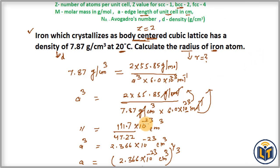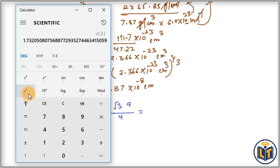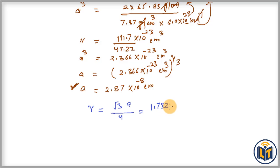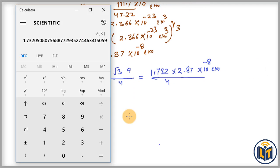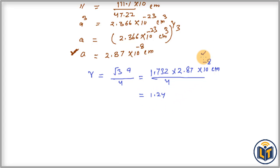Plugging in the values: R equals (root-3 times a) divided by 4. The value of root-3 is 1.732, and a is 2.87 times 10 to the power minus 8 centimeters. Multiplying 1.732 by 2.87 and dividing by 4 gives 1.24 times 10 to the power minus 8 centimeters. This is the radius of the iron atom in the BCC structure.